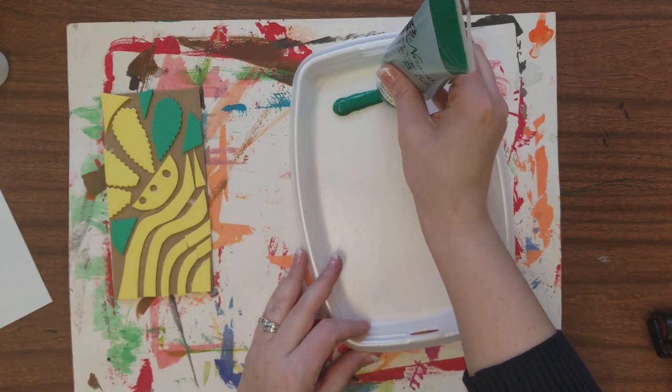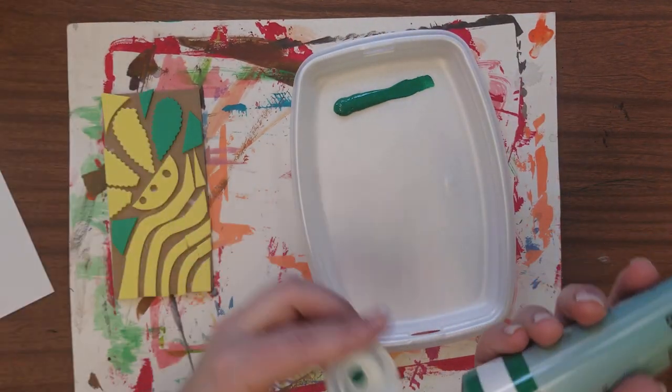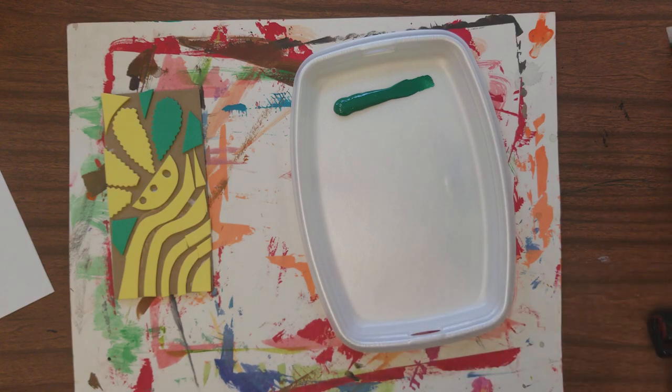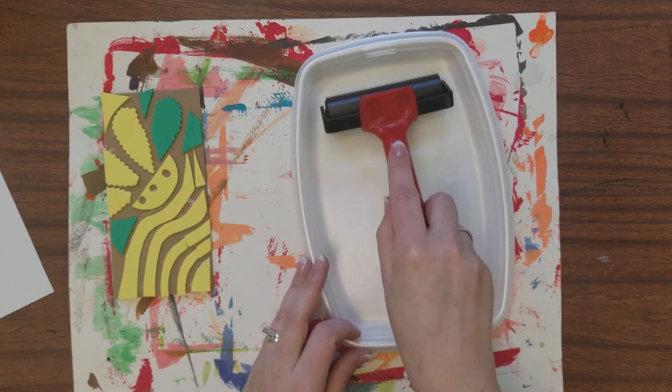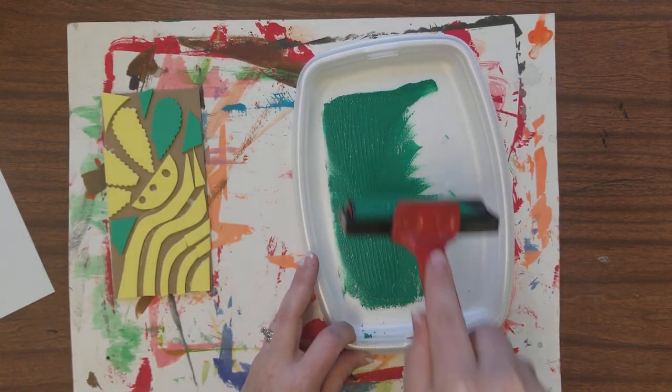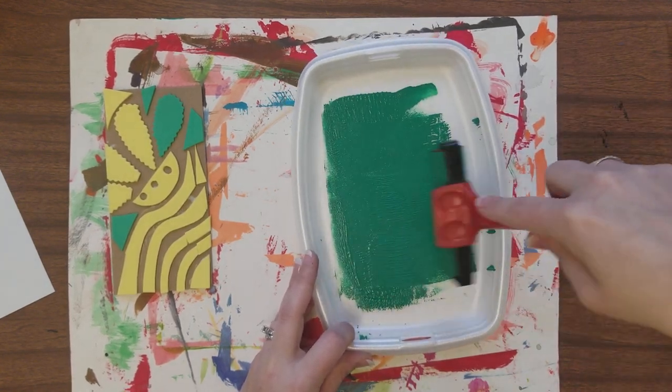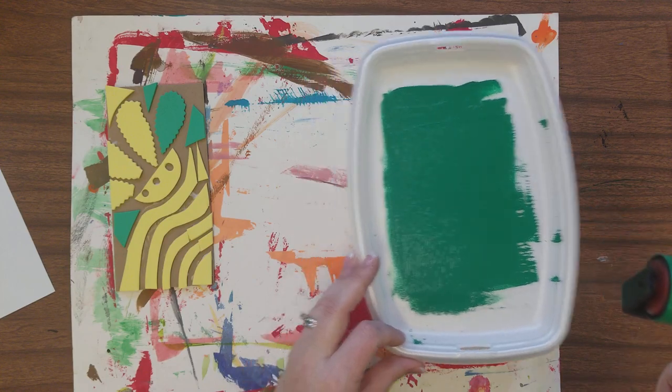And to print, we're going to use printmaking ink. It's kind of like paint. It's just a little thicker, a little stickier. And then we're going to use our rolling tool again. This is called a brayer. And what you'll want to do is, pulling down in one direction, you want to ink up your brayer so it looks like it's even on all sides.